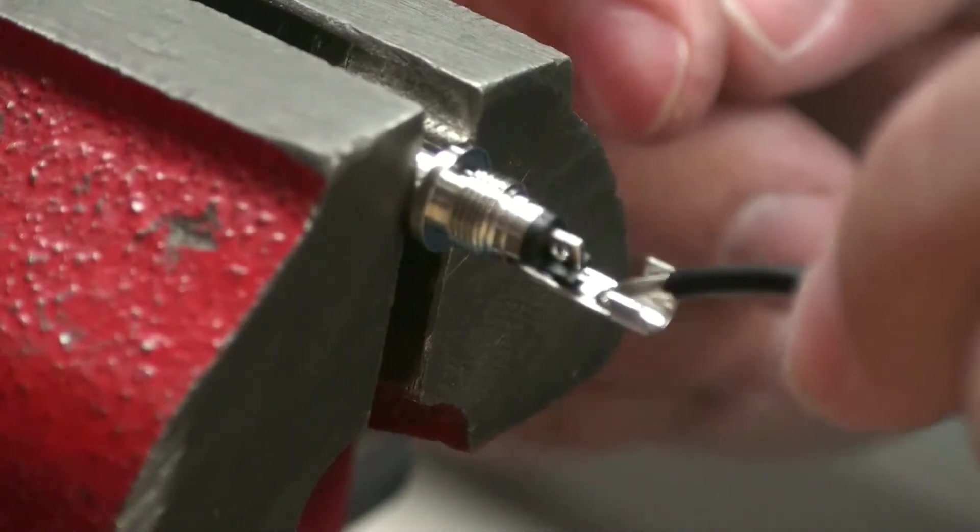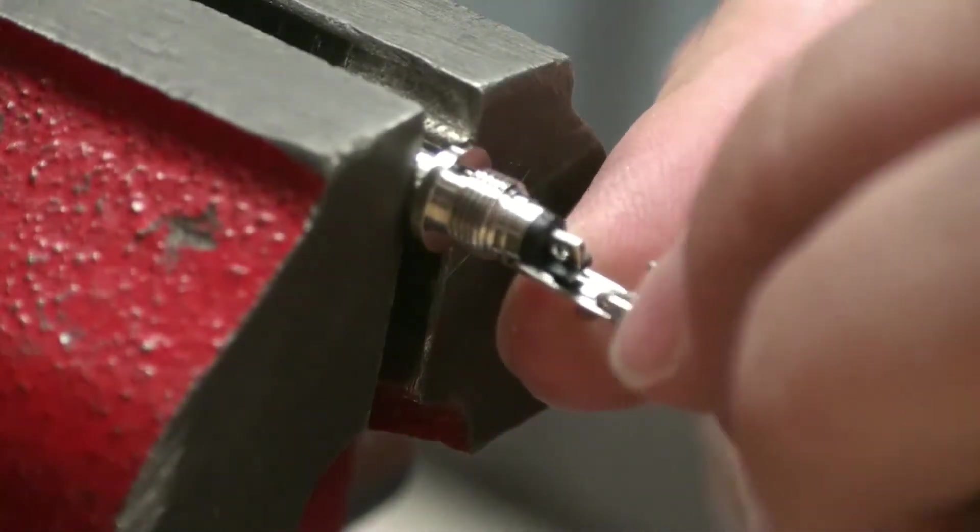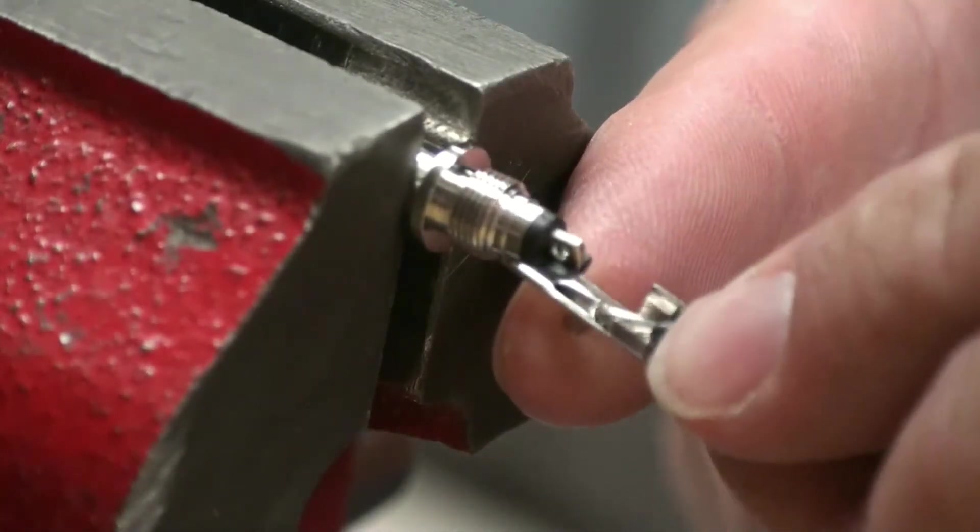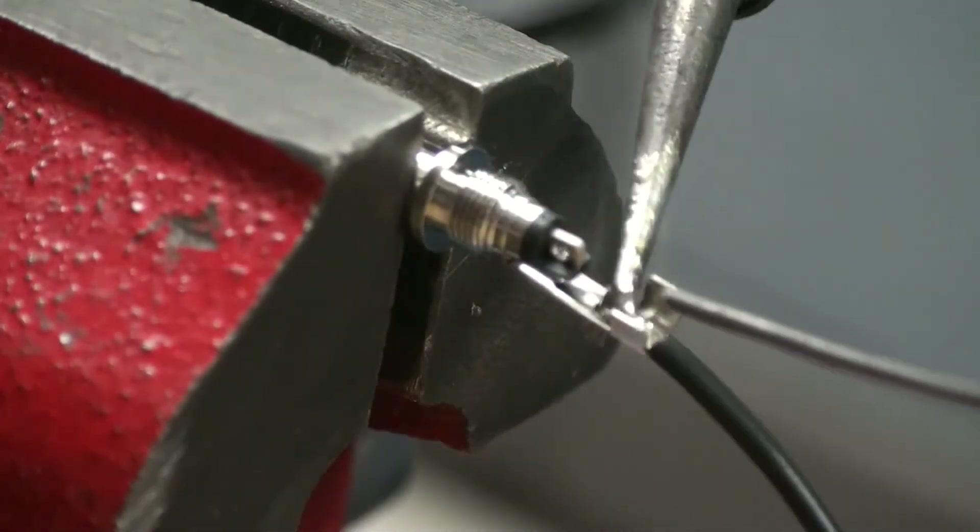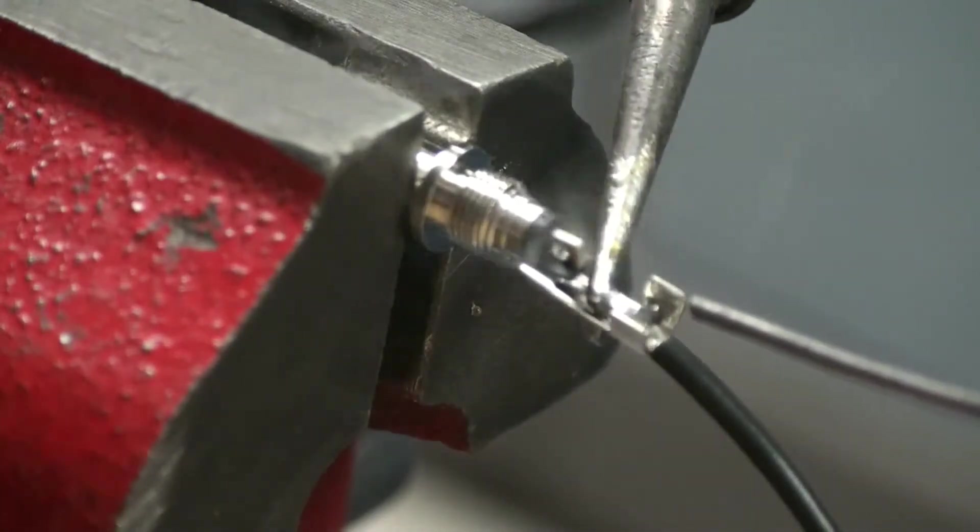Now let's solder the power wires onto the supplied connector. Instructions on how to do this are included with the TNC.